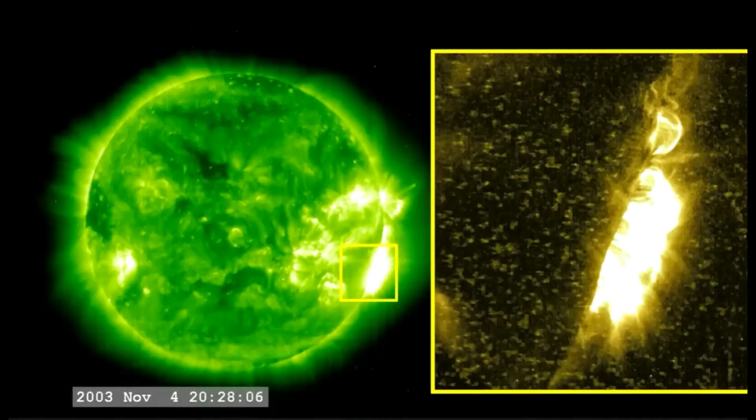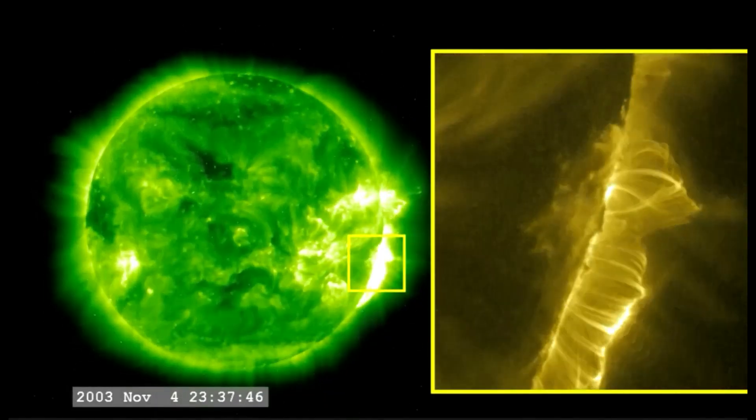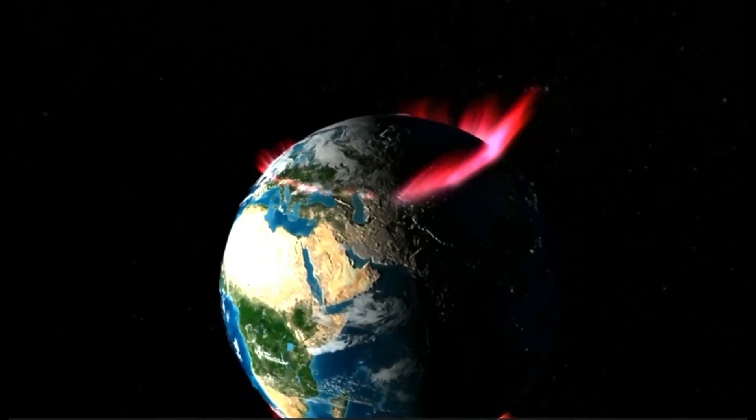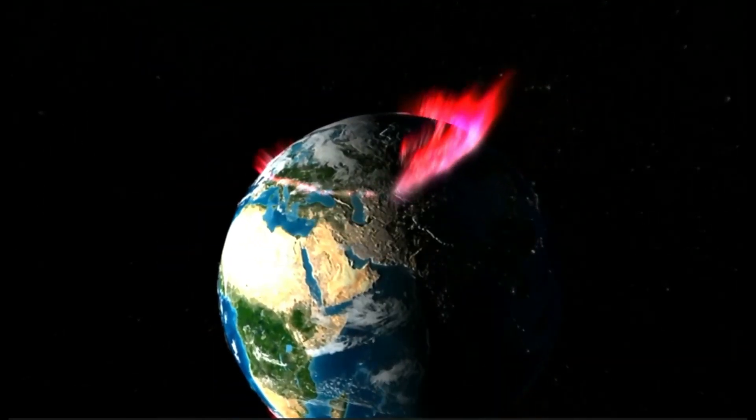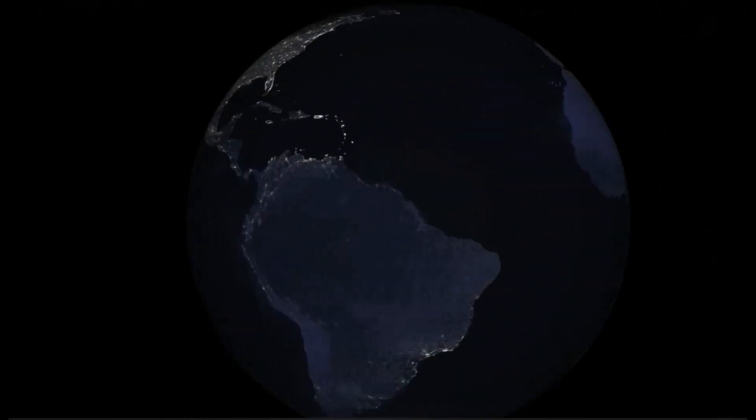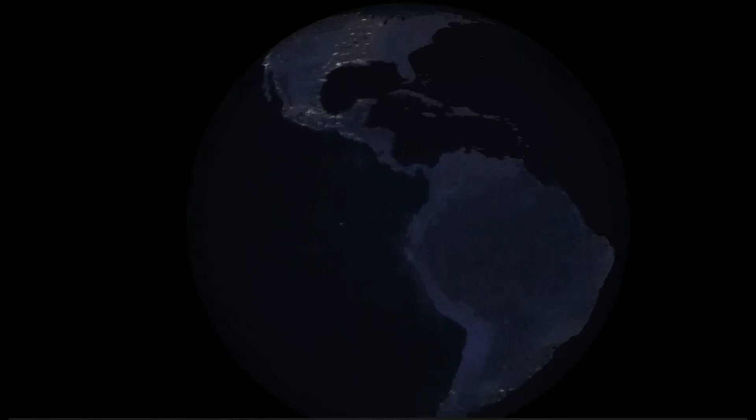A powerful X-class flare like that can create long-lasting radiation storms, which can harm satellites and even give airline passengers flying near the poles small radiation doses. X-flares also have the potential to create global transmission problems and worldwide blackouts.